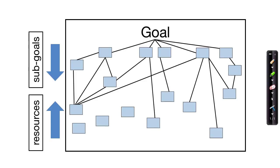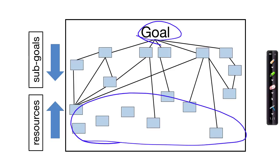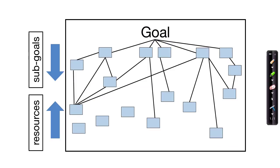Here's what a finished diagram might look like. The overall goal is stated at the top. Each blue rectangle represents a sticky note with an idea — either a resource or a sub-goal written on it. We see resources near the bottom of the diagram and goal refinements near the top. Some of these sub-goals may have been broken up into sub-sub-goals or other methods for achieving the original sub-goal.